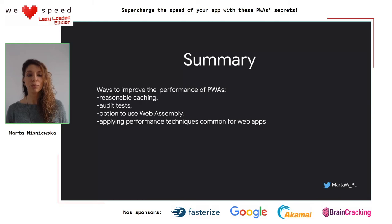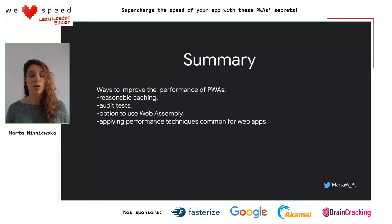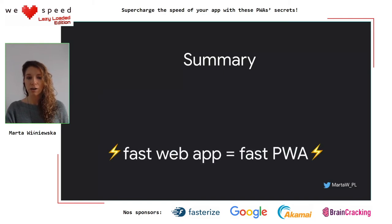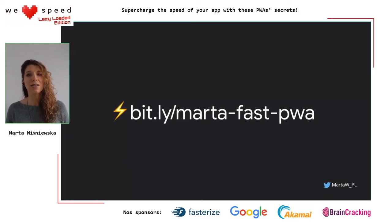Let's sum up. Today I told you about ways to improve web performance for progressive web apps. Caching is the main source of making your app faster, but it should be reasonable — remember to run audits before caching. Also consider applying WebAssembly for cases where JavaScript isn't good enough. Most importantly, the same performance techniques common for regular web apps are great for progressive web apps, because a fast web app means a fast progressive web app. Thanks for your attention. If you want the full slides, there's a link. If you have any questions, I'm free to answer.